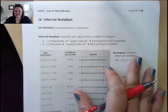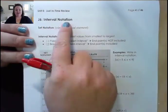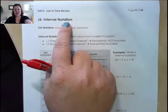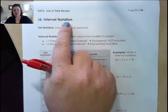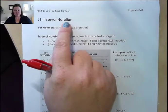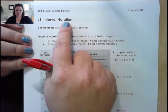Moving on to J6, which is our next review section. This time, we are focusing on interval notation. So many times, we are going to write our answers in interval notation. We need to know how to go from set notation to interval notation, how to go from a graph to interval notation, and how to go between all those different ways of representing our answer.